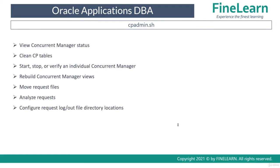It is very important for DBAs to always know the request log files and out files locations. There is a tool introduced in the last one to two years called cpedmin.sh. This tool helps DBAs monitor and manage concurrent processing. With cpedmin.sh you can check manager statuses, clean the concurrent processing related tables, stop/start individual managers, and more. Cleaning the tables is important when managers are not starting properly or not processing requests — sometimes the process IDs are not properly updated in the tables, causing issues. Cleaning resets those tables without deleting data, just cleaning up the concurrent manager specific processes so you can restart normally.